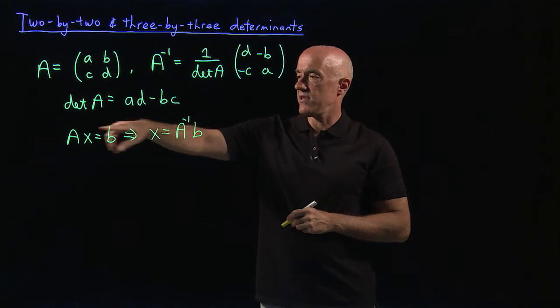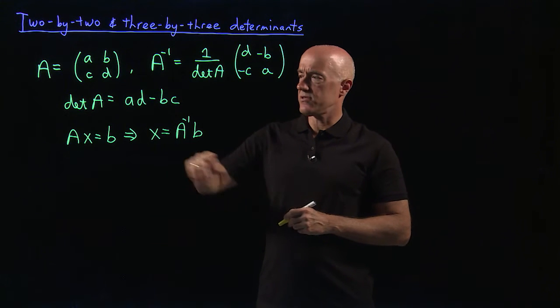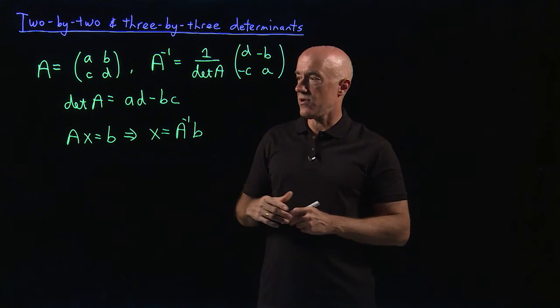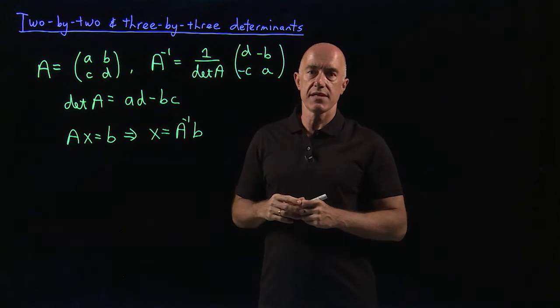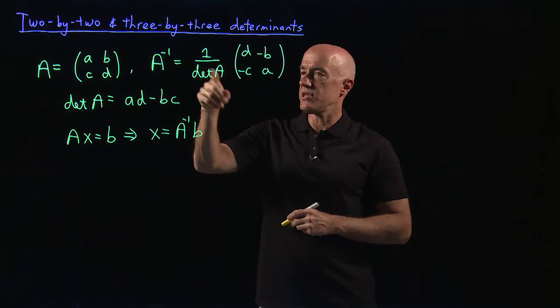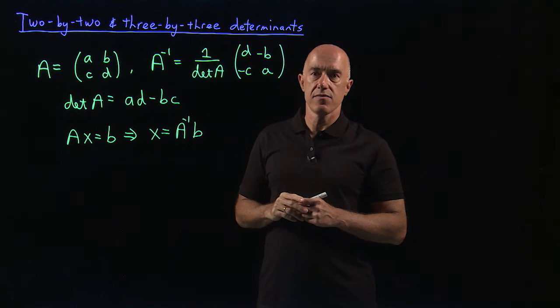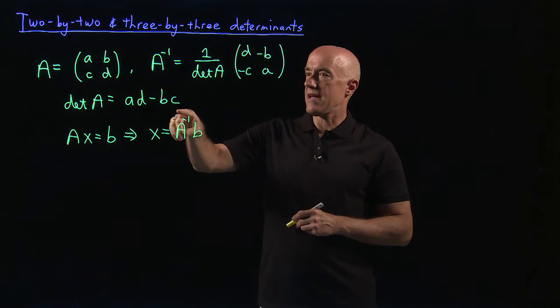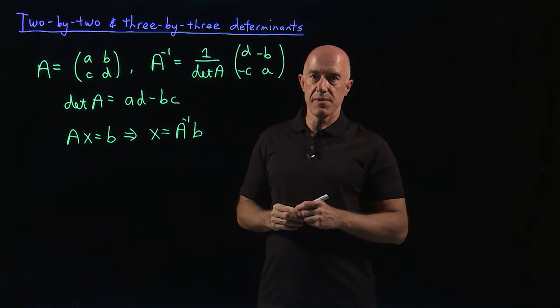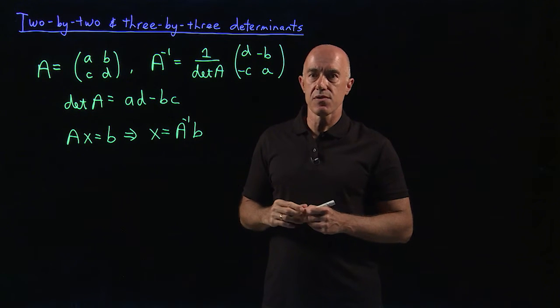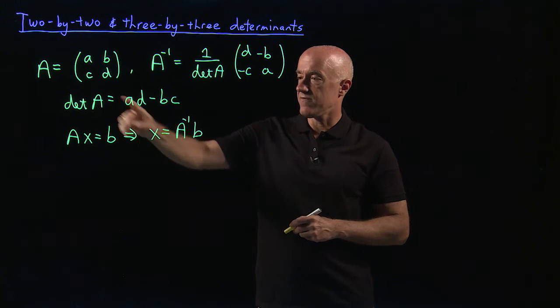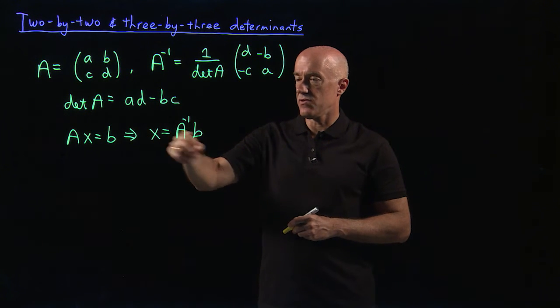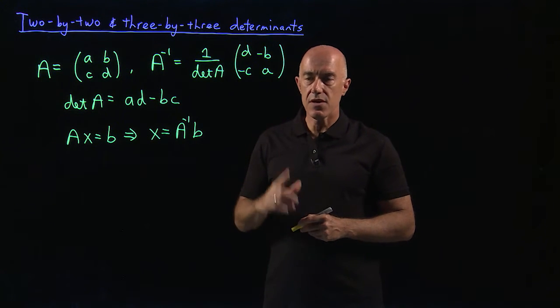So the existence of the inverse gives you a unique solution to a system of N equations and N unknowns. And for the inverse to exist, this function determinant of A, which takes an N by N matrix and returns a number, that number has to be non-zero. If that number is not zero, then the matrix A is invertible, and Ax equals B has a unique solution.